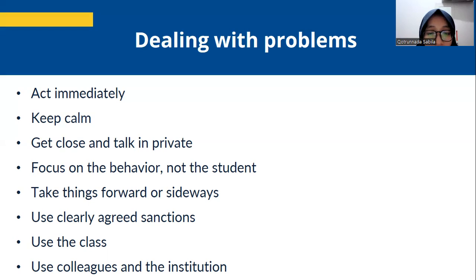When things are getting badly out of hand, we can get the class to discuss the situation and reach some consensus about what to do next. And then, the last is use colleagues and the institution when there's a problem. We should try to work out exactly what is happening, and then consult our colleagues, asking them for guidance. When the problem is threatening to get beyond our control, we would be well advised to talk to coordinators, directors of studies, and/or principals.